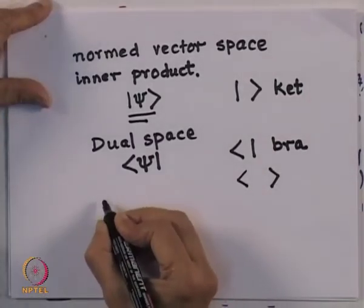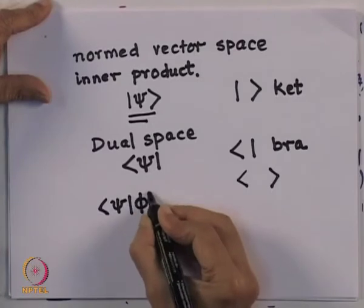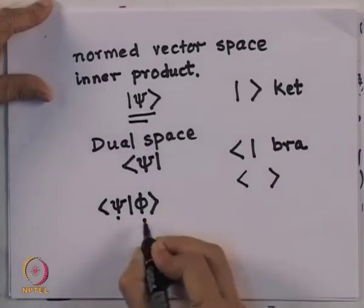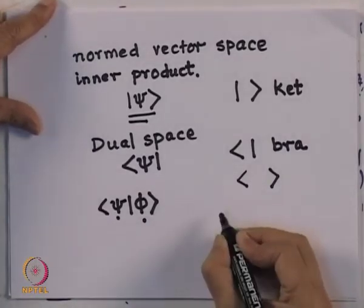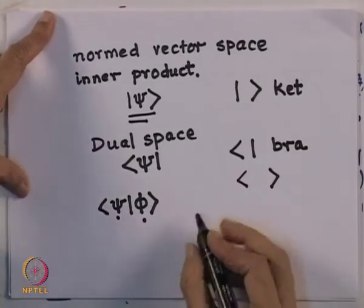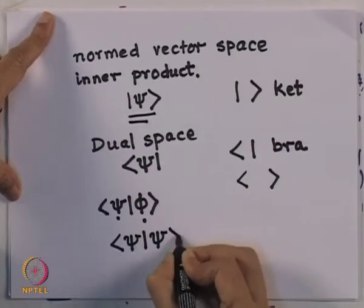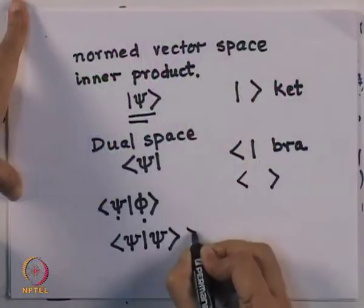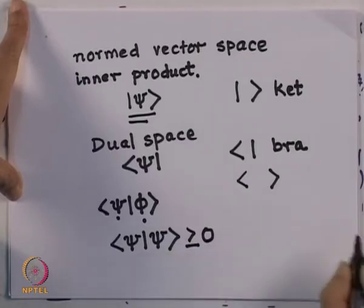We define an inner product between two vectors in the Hilbert space. Let us call one of them the ket φ and the other the bra ψ. The product of ψ with φ — we will see the minor difference between a scalar product and this — is the inner product defined in this space. If you look at the inner product of the bra corresponding to ψ with the vector ψ itself, this is greater than or equal to 0, and it becomes 0 only when ket ψ is a null vector.